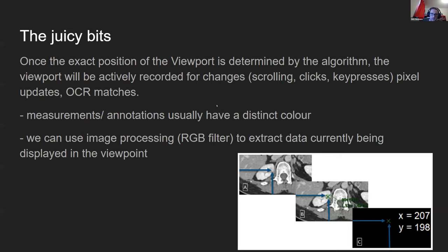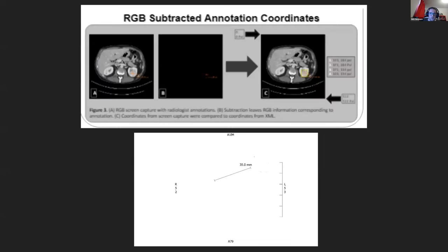Once this position is extracted, the screen scraper starts recording video footage of that viewport and checks for changes — scrolls, clicks, key presses, pixel updates, and OCR matches. We can do this because measurements and annotations usually have a distinct color, and we have a color selection wheel that you can pre-define for your PACS viewer. We can then use image processing like RGB filters to extract data currently being displayed in the viewport. Here is an example of RGB subtraction in action — we can very clearly isolate a measurement, an annotation, and additional information in the viewport.